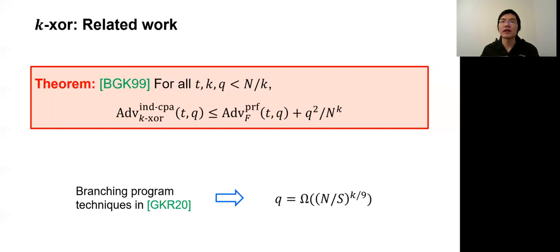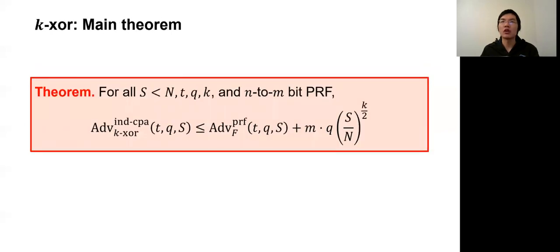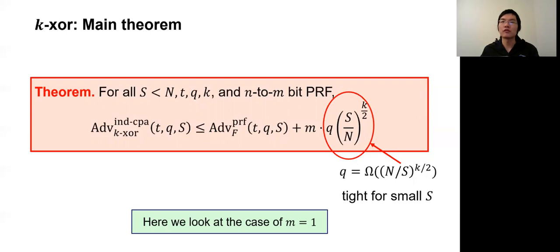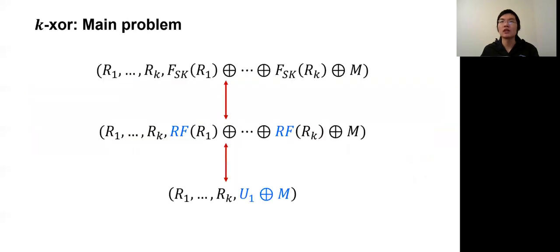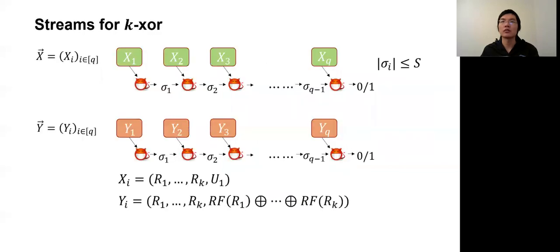For k-xor, we prove the following theorem, which implies that big N over S to the k over 2 queries are needed for constant advantage attack. We also give an attack in our paper to show that such a trade-off cannot be improved for very small memory S. To see how the proof works, in the following, we look at the case of M equals 1 for simplicity. The proof starts with, again, replacing the PRF by a truly random function, giving us the PRF advantage of upper bound. Our focus is still the information theoretic term for the two hybrids. As before, we can still cast the indistinguishability analysis into the streaming model.